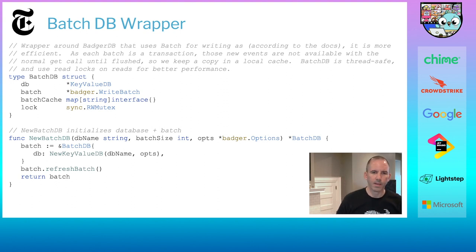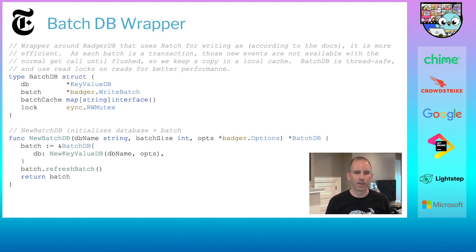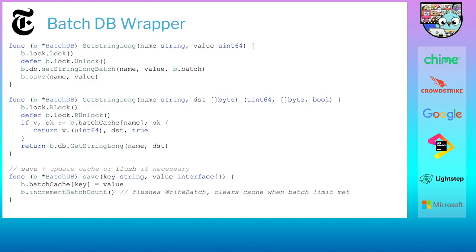The BatchDB wrapper has a pointer to the database, the write batch, and then the internal cache, which is just a map. Here's a wrapper for the string-long pair. Because I'm dealing with two data structures at the same time, I wanted it to be goroutine-safe, so I use the Go read-write lock, which allows slightly different locks on getting versus setting for better performance. On the set, you'll see a call to save — this is where we save the data to the internal map. And I have a batch count; when it gets up to 10,000, it flushes the write batch to the database and clears the internal memory cache.